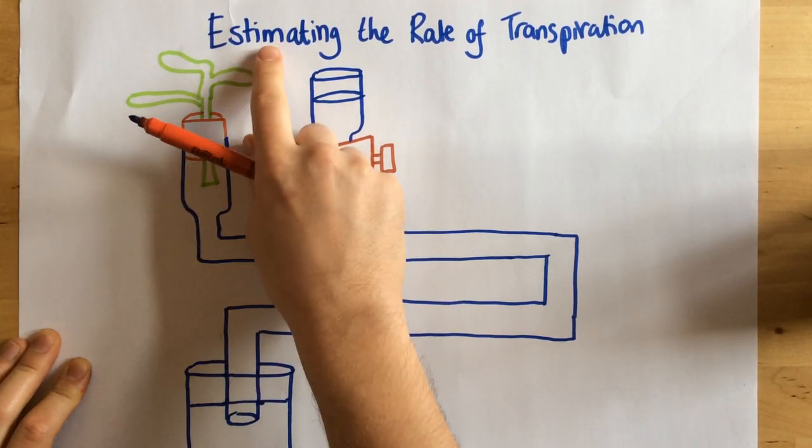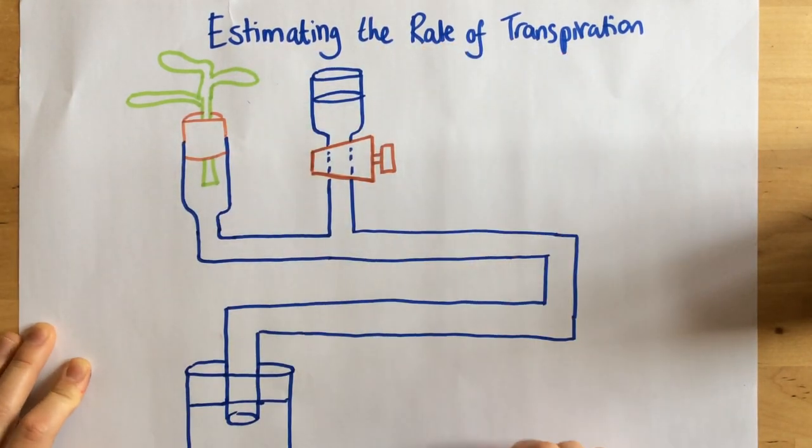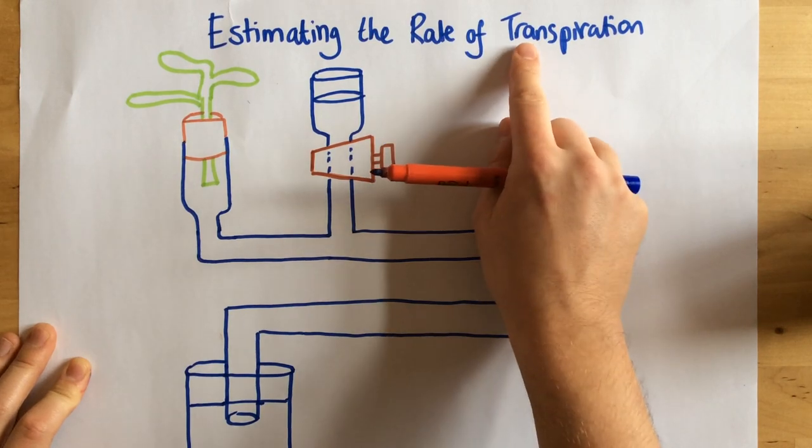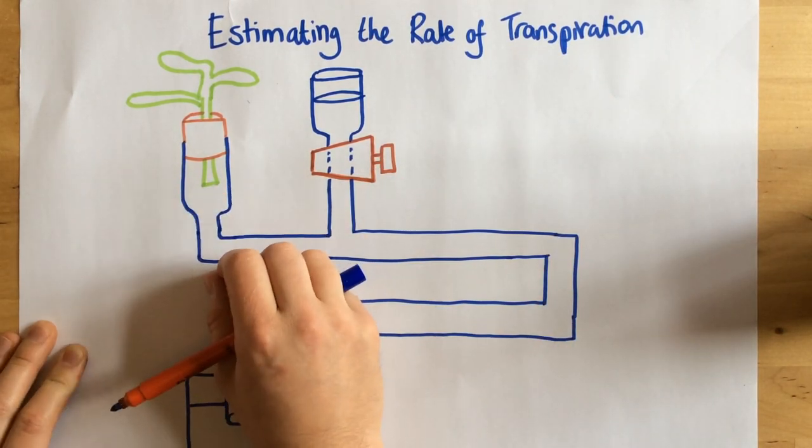Okay, today I'm going to talk to you about estimating the rate of transpiration. So as a quick recap, transpiration just means water loss from a plant.